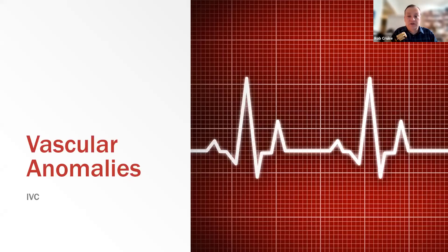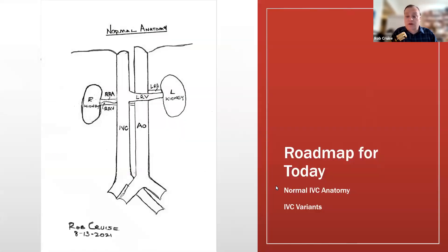Hello, and welcome to another lecture in interventional radiology. Today we're going to be looking at vascular anomalies of the inferior vena cava. We'll jump right in. First of all, we're going to talk about normal anatomy. It's always important to know what is normal — if something doesn't look exactly that, we know we have some sort of anomaly, whether it be a normal variant or, in some cases, a pathological structure formation.